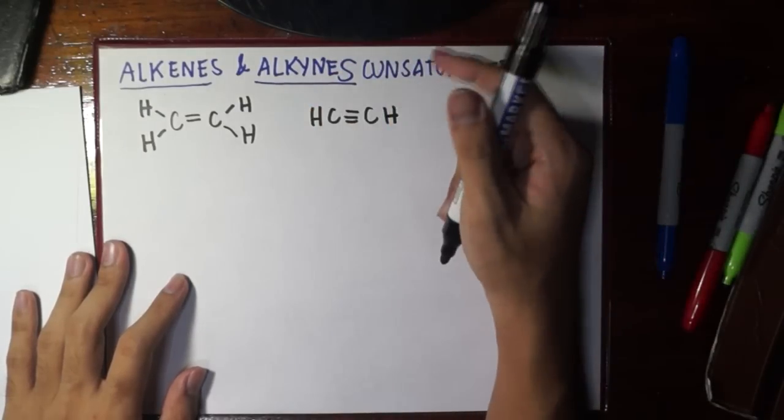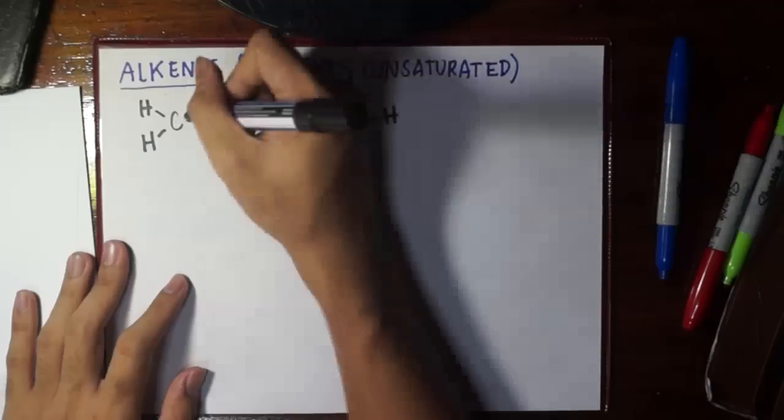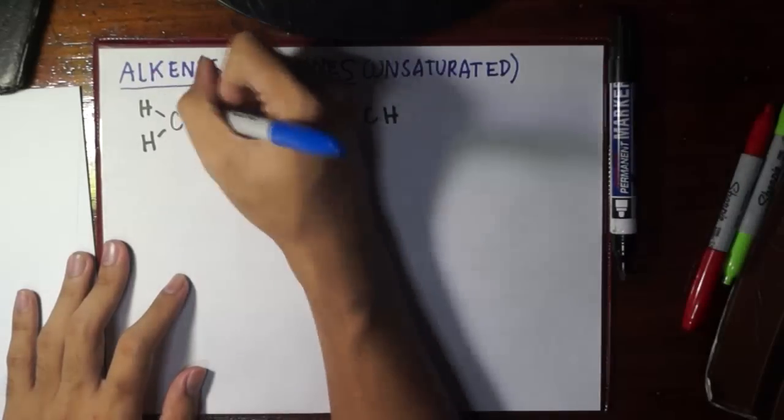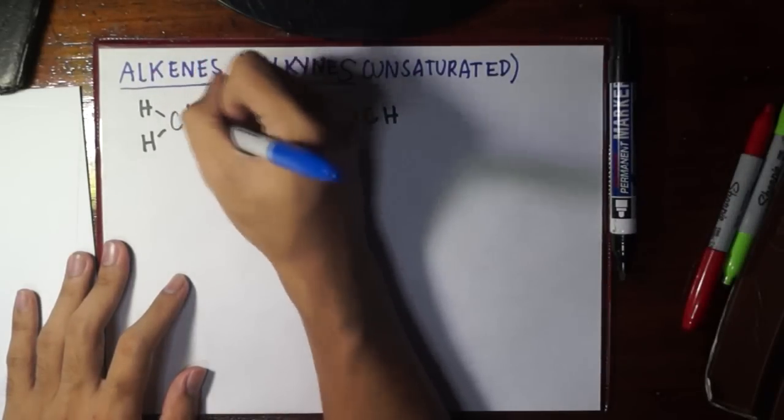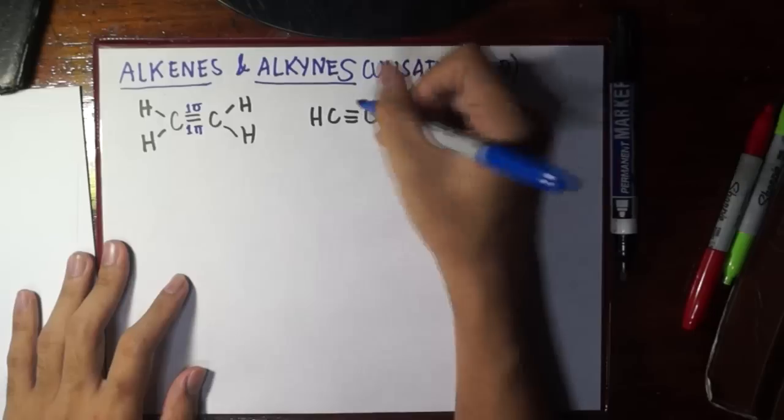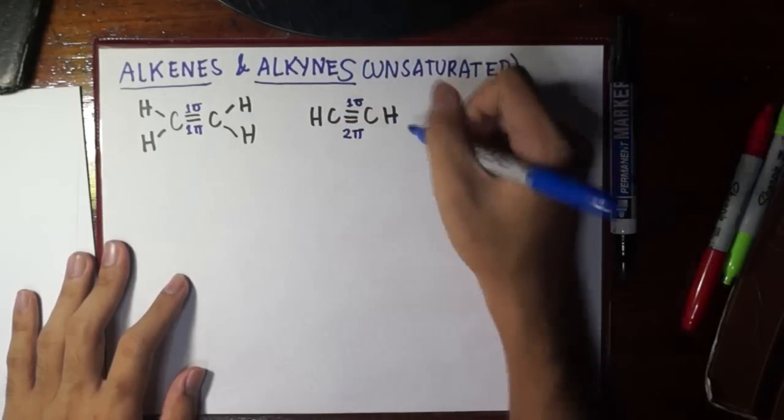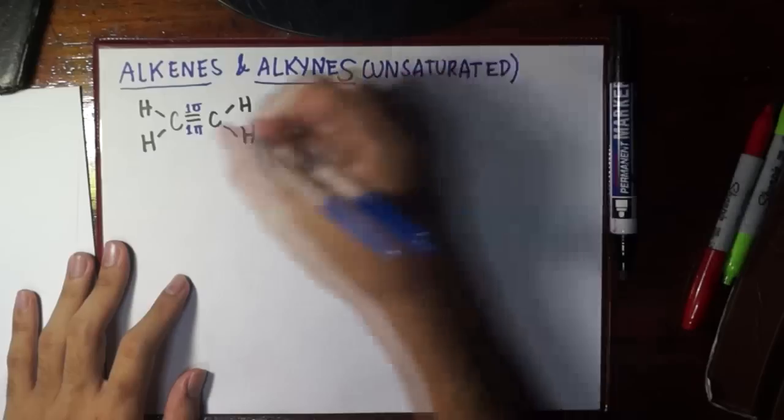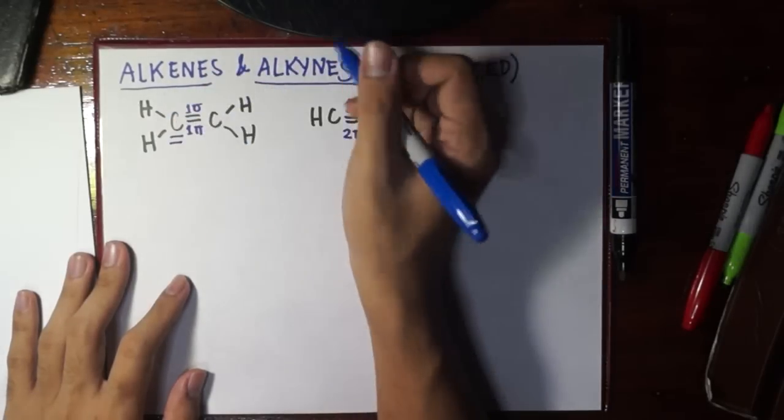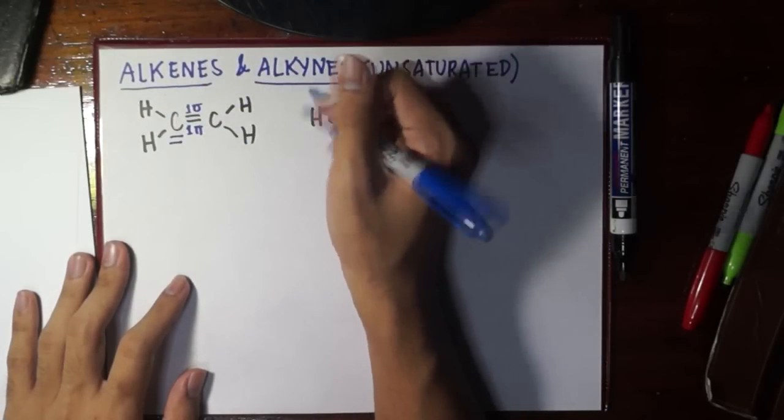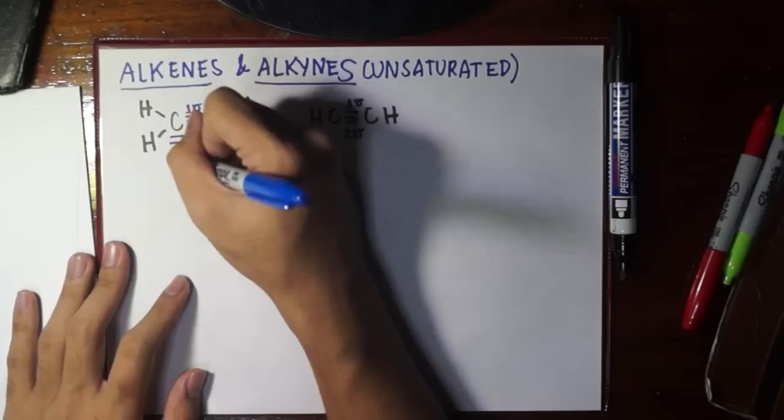We see here a double bond, and in a double bond we have one sigma and one pi bond. Here we have one sigma and two pi bonds.